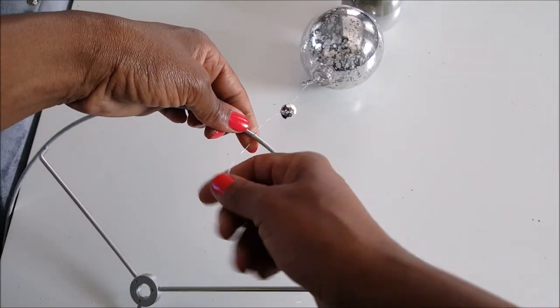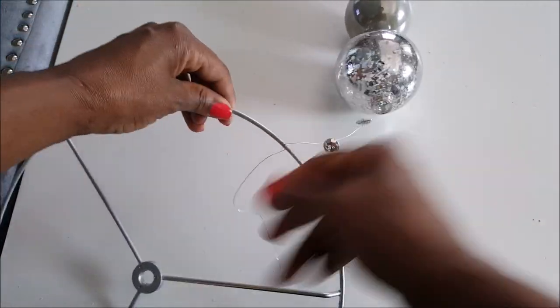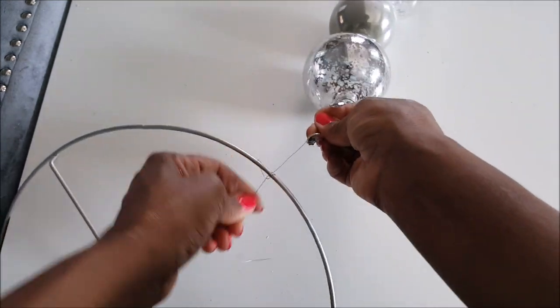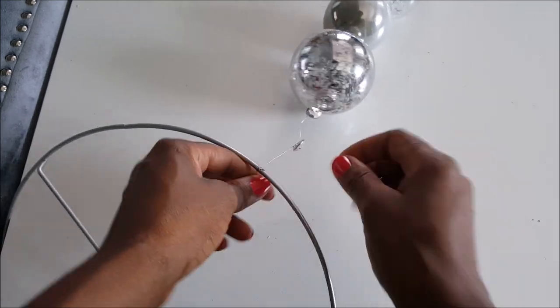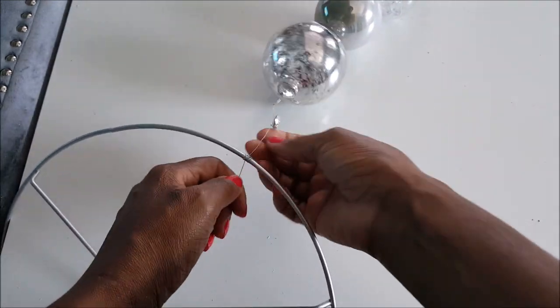And now I'm going to add the balls that I strung onto the galvanized wire to the lampshade frame. And I did six of these, so I'm spacing them equidistant around the frame.